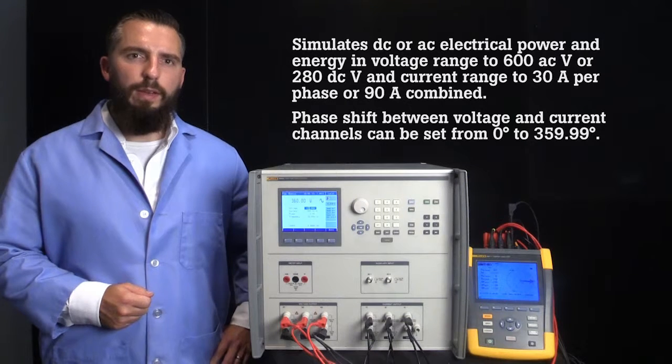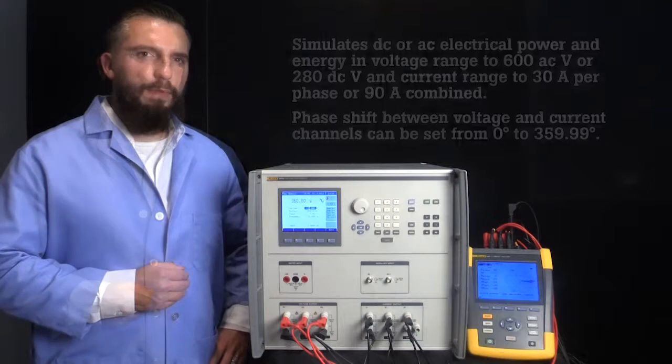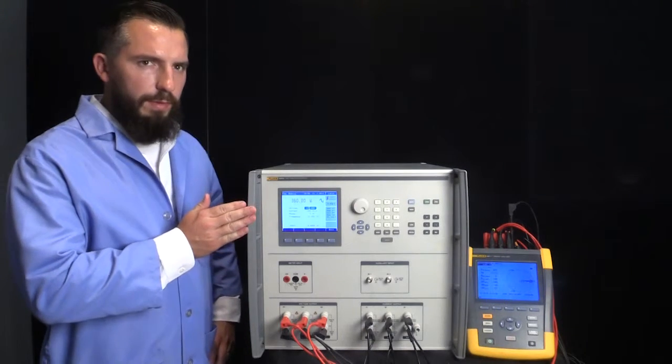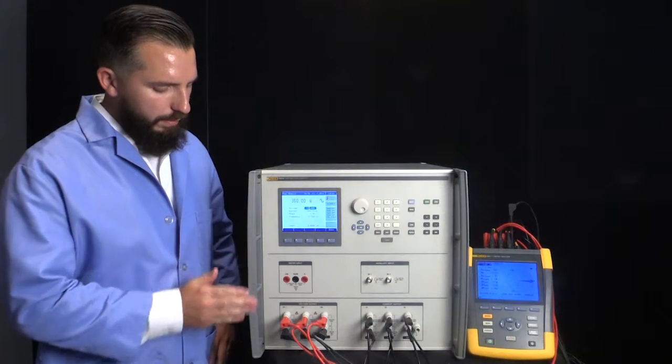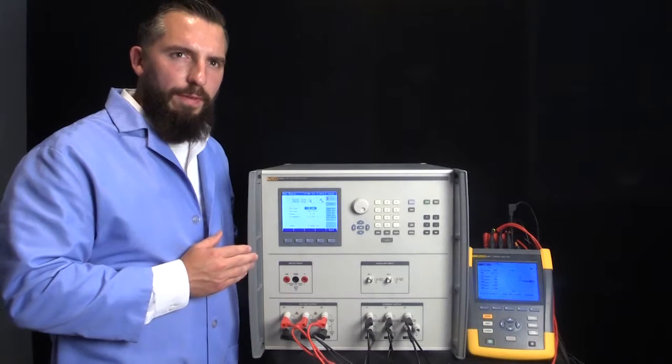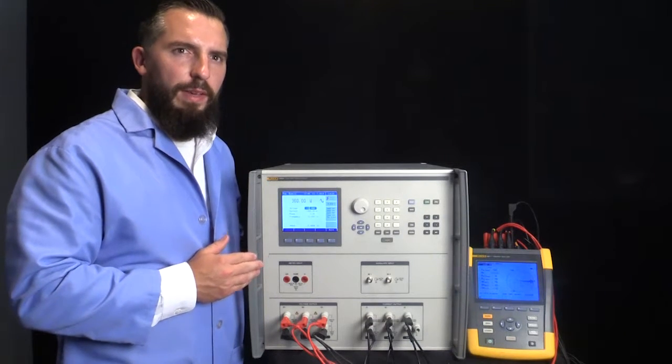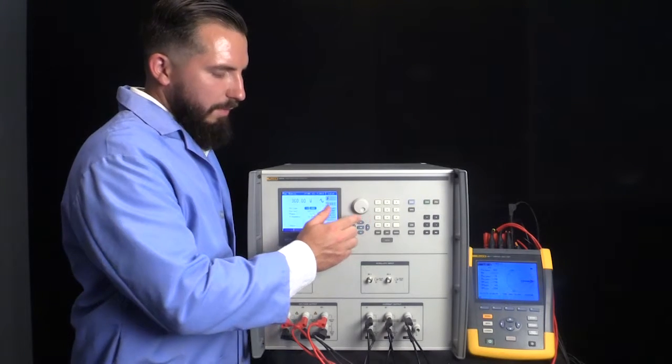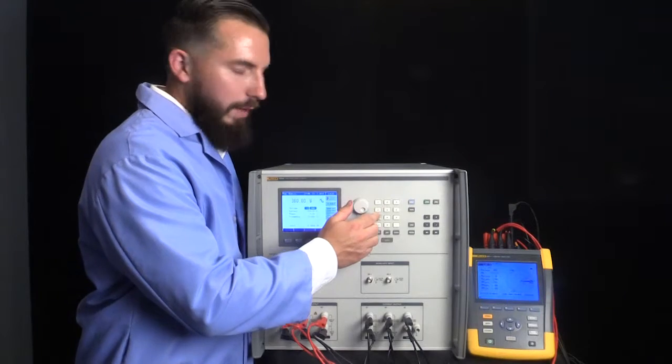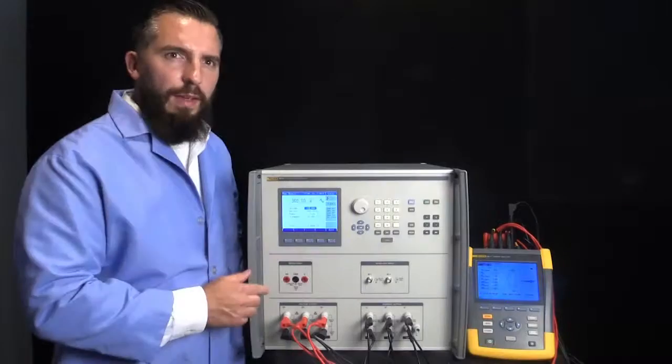The front panel is divided into three sections: the user interface, inputs, and outputs. The easy-to-navigate user interface provides a large, easy-to-read color display, as well as navigational hard keys, a rotary knob, numeric keypad, and illuminated standby and operate keys.